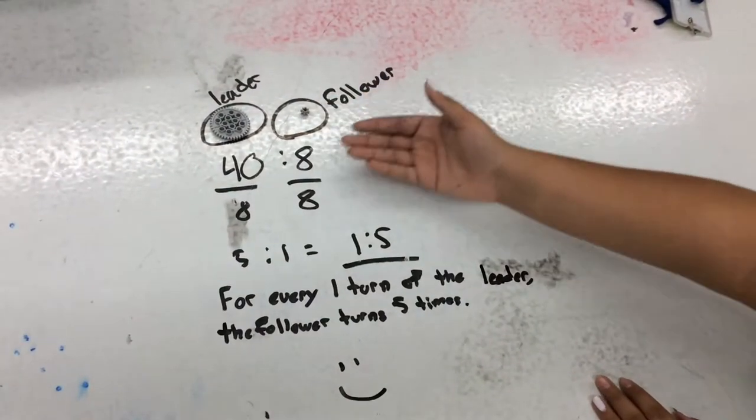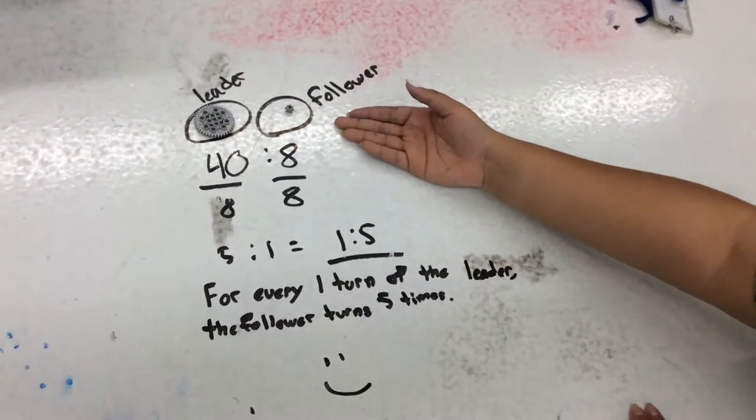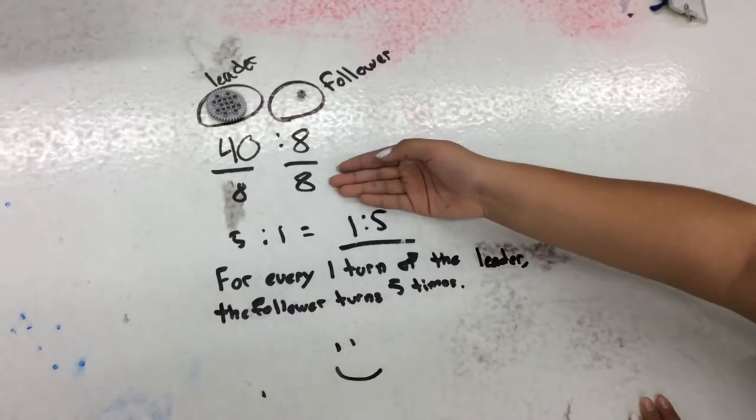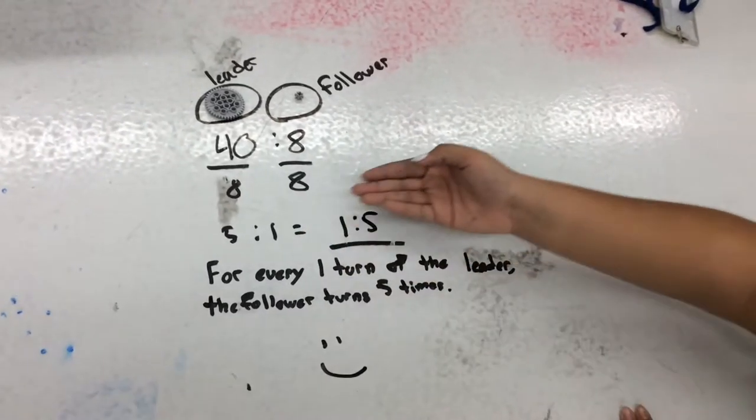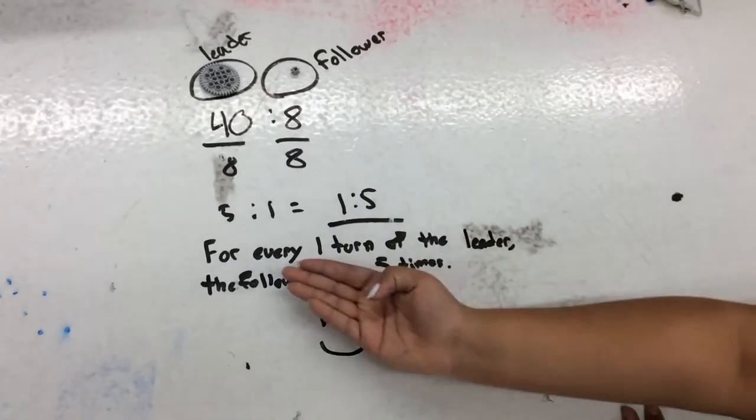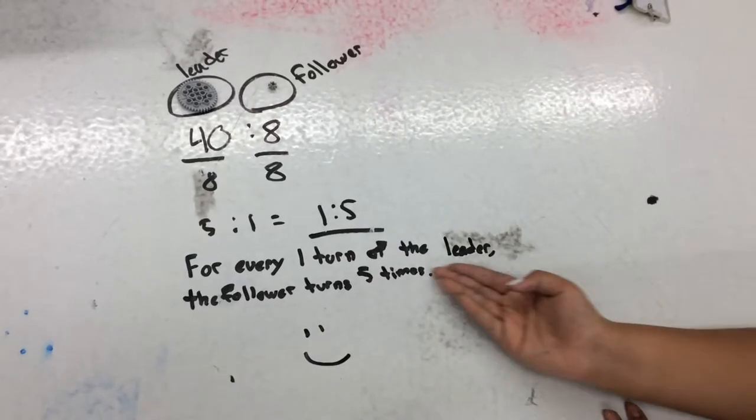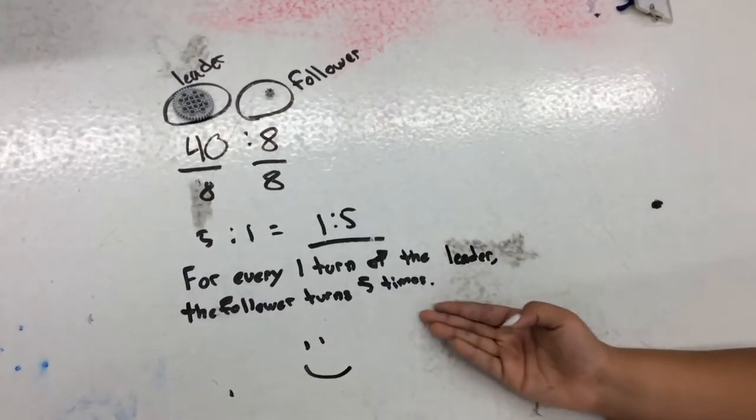So the leader gear is the 40 tooth gear and the follower gear is the 8 tooth gear. If you divide them both by 8, it equals 5 to 1, which equals 1 to 5. For every one turn of the leader gear, the follower gear turns 5 times.